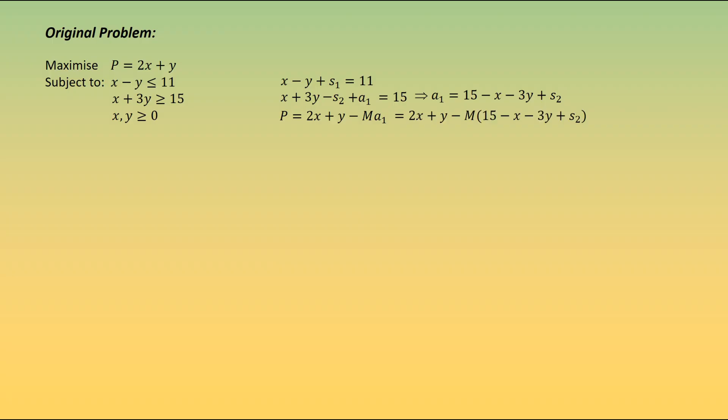What we do next is we substitute in for any artificial variables. So in this case, I'm substituting in a1. That's why we did the stage just before. We then rearrange that to collect all the x's, y's and so on. And finally, we move all of the variables to the left-hand side with the P and just keep the numbers on the right. So remembering that M is a number, minus 15M is also just a number.